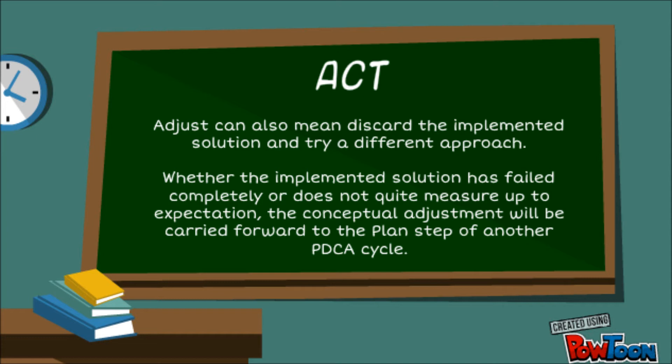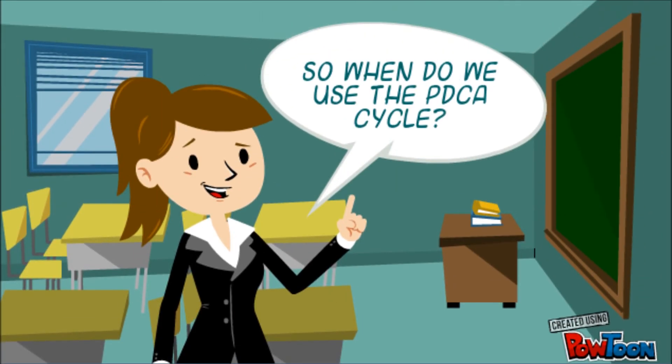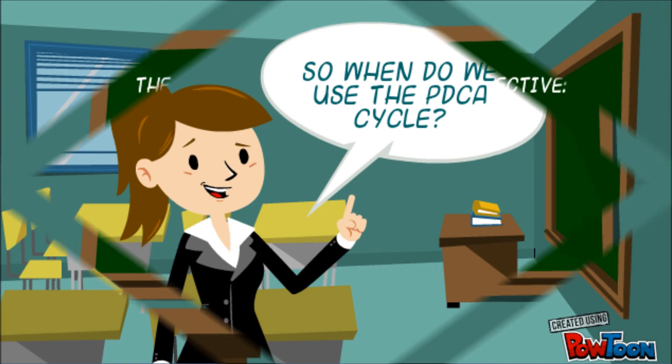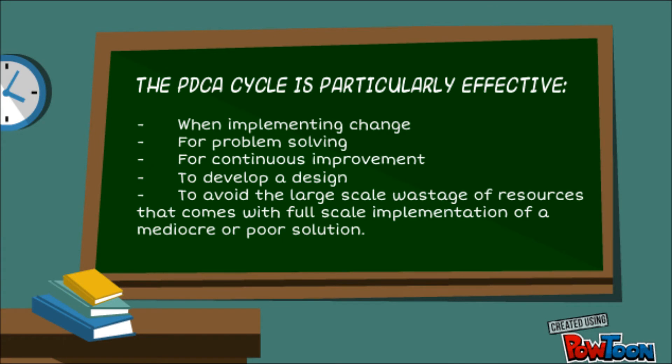Documentation for this stage may include business process mapping, standardization procedures, and new training for standard processes. Why do we use the PDCA cycle? The PDCA cycle is particularly effective when implementing change, for problem solving, for continuous improvement, to develop a design, and to avoid large-scale wastage of resources that comes with the full-scale implementation of a mediocre or poor solution.